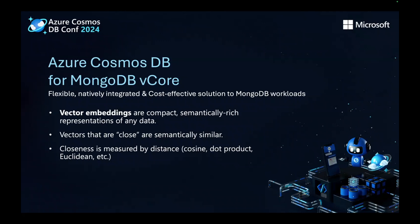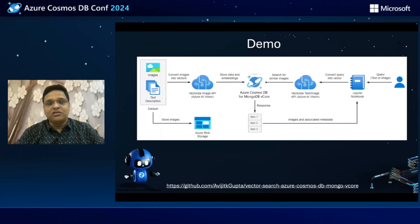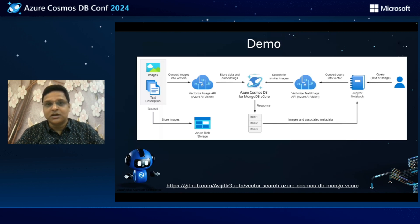Now let us experience this with our demo. We have used three different Azure services for building the demo: an Azure AI Vision resource, an Azure Cosmos DB for MongoDB vCore resource, and a blob storage container. At a high level, we can split our demo into three phases.